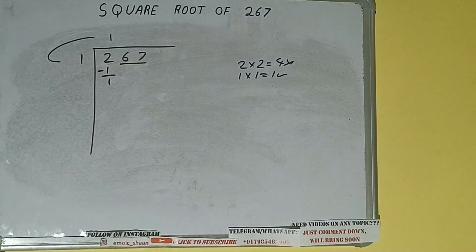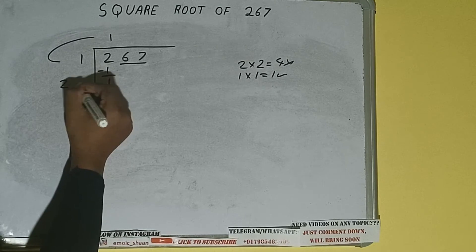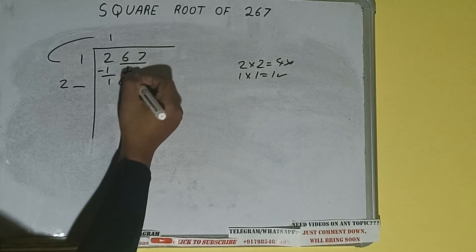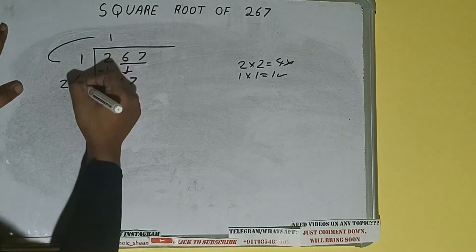We did one into one, so add both. One plus one will be two, write it here and keep one digit extra. This number we need to make big, so bring the next pair down and it will be 167.